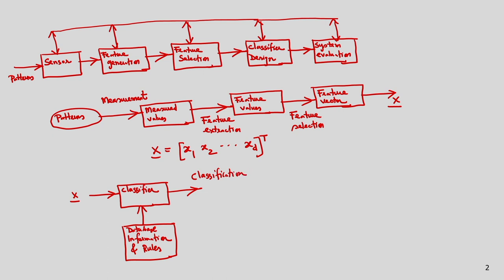In supervised learning techniques, for each and every class I have training samples, and based on these training samples I have to train the classifier. This is called learning. After this, I get the learned model, and based on this learned model I can do the classification. I have some rules for classification, and based on these rules I am doing the classification.